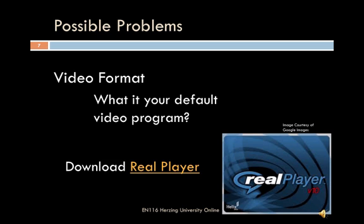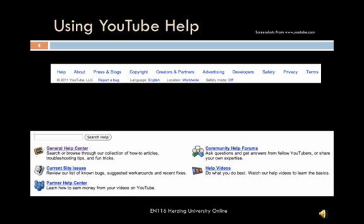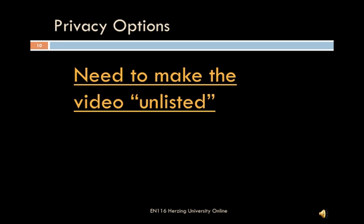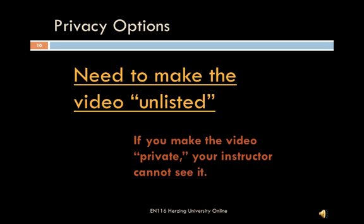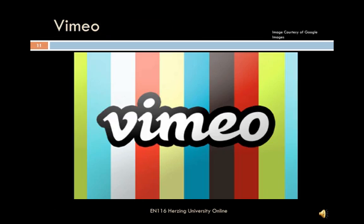Once you have successfully uploaded your video, you have several options for controlling who can see the video. If you don't care who can see the video, do nothing — this is the default setting. But if you want to make sure that only people to whom you give the link can see the video, then you need to make the video unlisted. Once you've made your video unlisted, you still have to make sure that your instructor knows where to go to see the video. To do this, you simply need to give your instructor the link — cut and paste the URL or the website address. Your instructor should be able to copy and paste the web address directly into his or her browser and go immediately to your video. Make sure that if you're using YouTube, you do not make the video private — you should make it unlisted.